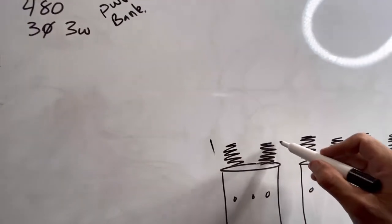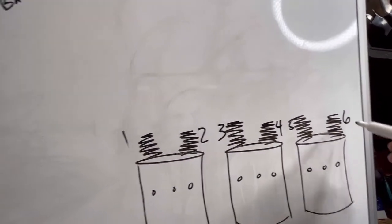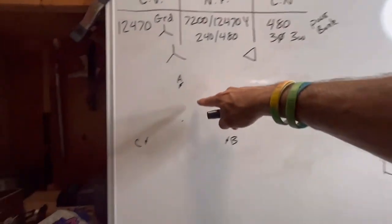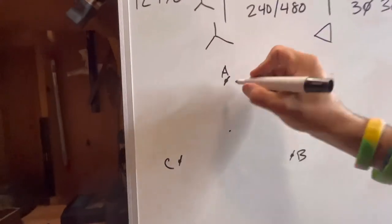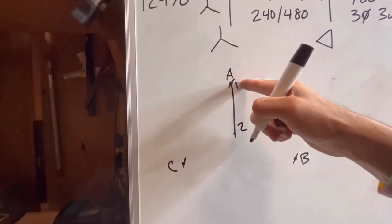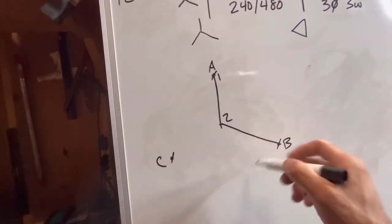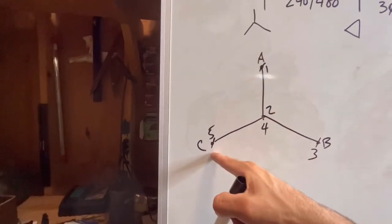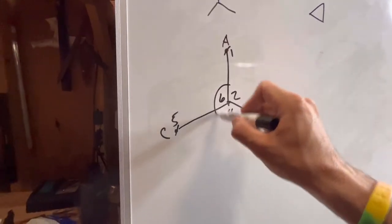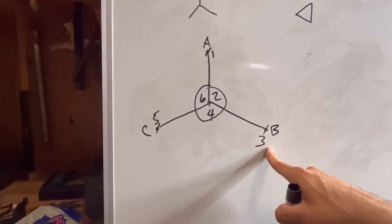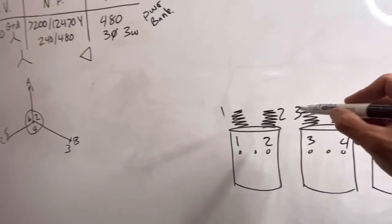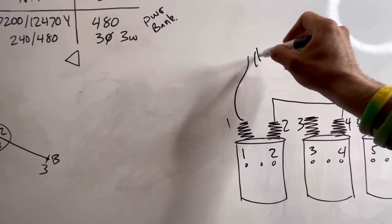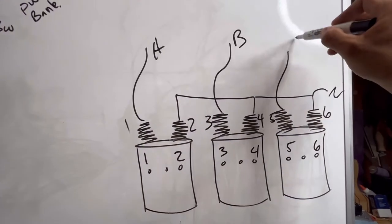Next, number our transformer bank from left to right: 1, 2, 3, 4, 5, 6, both primary and secondary. Then hook up the primary circuit — it's a Y hookup. I take my 1,2 transformer: 1 going to A, 2 going to neutral. My 3,4 transformer: 3 to B, 4 to neutral. My 5,6 transformer: 5 to C, 6 to neutral. So we've got a 2, 4, 6 tie all going to neutral. 1 going to A, 3 going to B, 5 going to C.